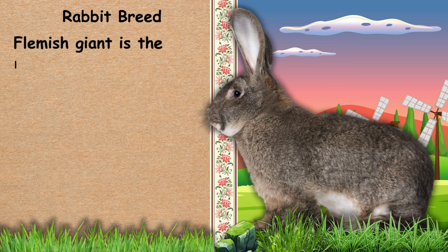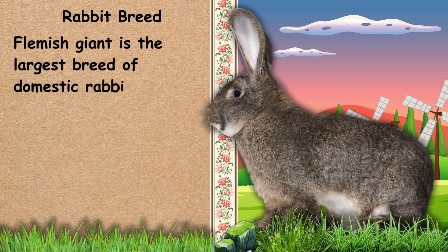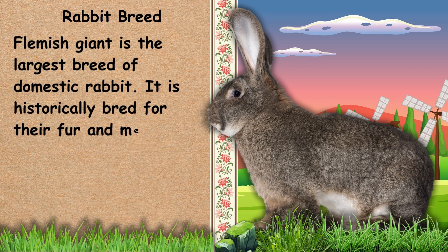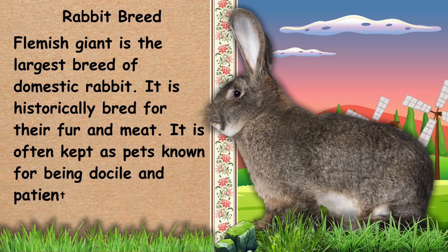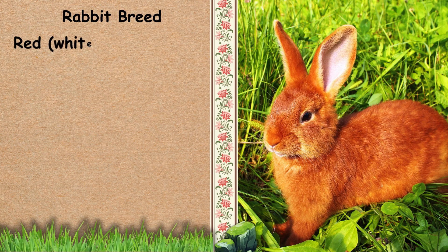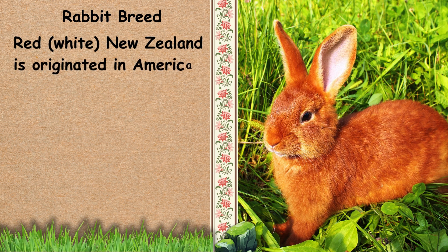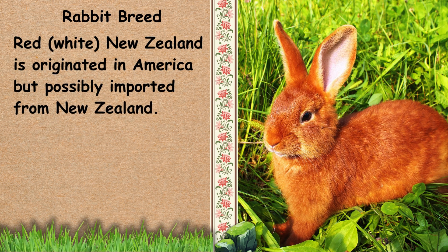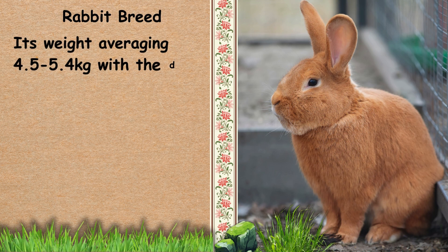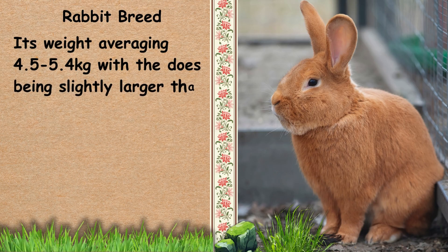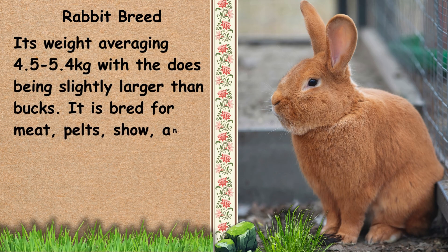Next, we have Flemish Giant. Flemish Giant is the largest breed of domestic rabbit. It is historically bred for its fur and meat, and is often kept as a pet, known for being docile and patient when handled. Next, we have Red, White, New Zealand. Red, White, New Zealand originated in America but was possibly imported from New Zealand. Its weight averages 4.5 to 5.4 kg, with does being slightly larger than bucks. It is bred for meat, pelts, show, and laboratory uses.